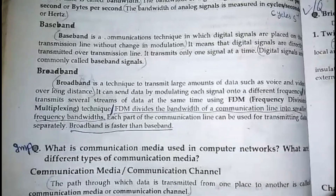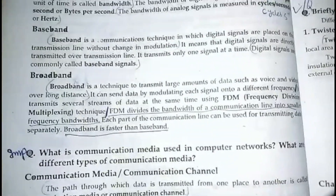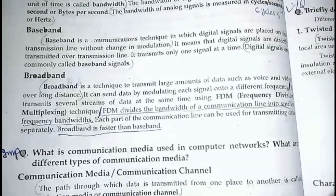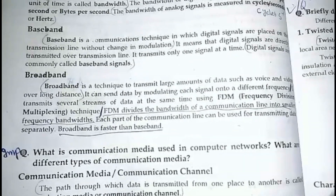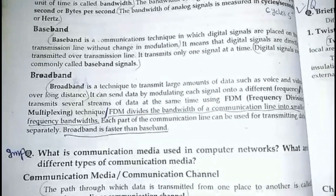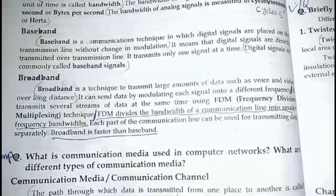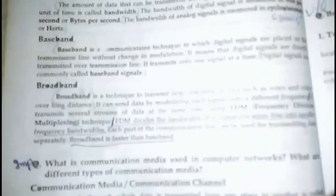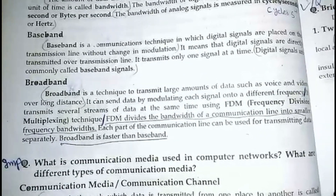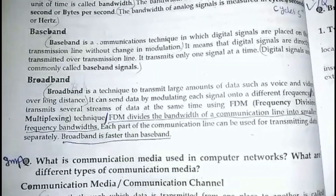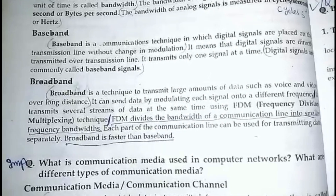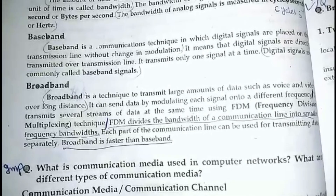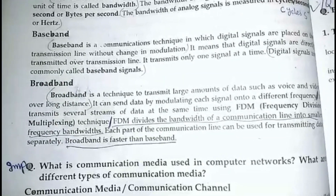Now let's talk about broadband. What is broadband? Broadband is used where you have long distance data and very heavy data, like videos and images. In baseband, we talked about transmission without modulation — that means one signal is sent to the other without change. Broadband, however, uses a technique called FDM, Frequency Division Multiplexing.